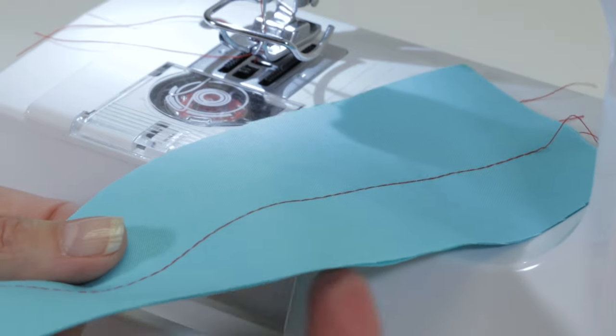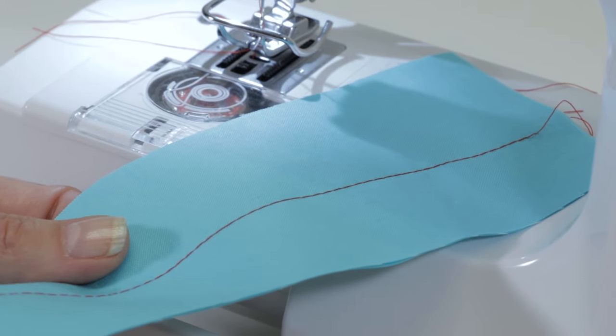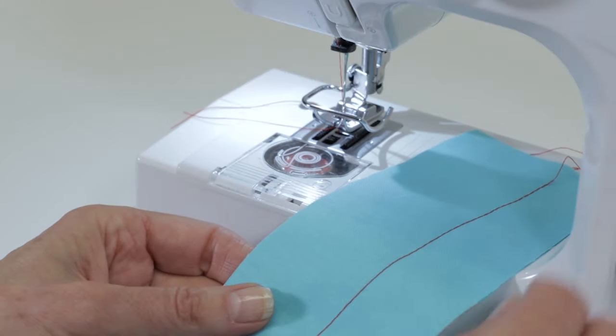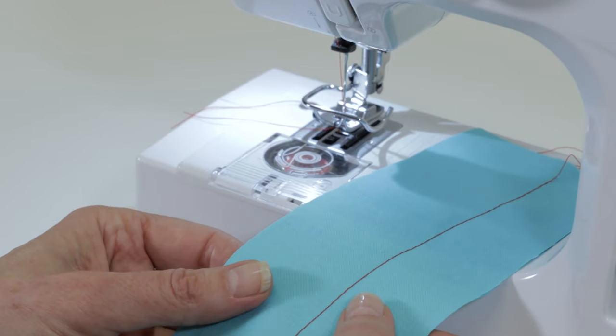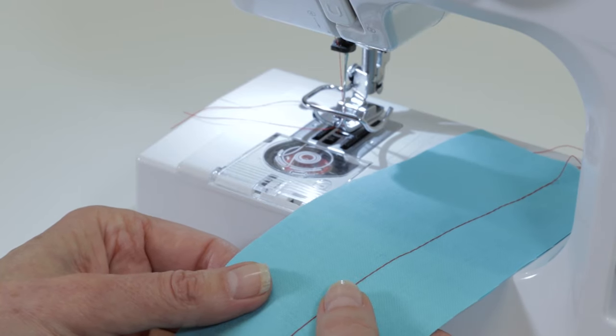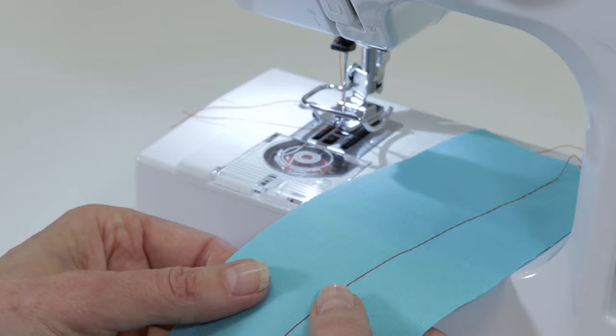When you sew, if you find thread loops or bunching on the back side of the fabric, it's actually an indication that you threaded the top of the machine incorrectly. So remove the thread and re-thread the top of the machine.